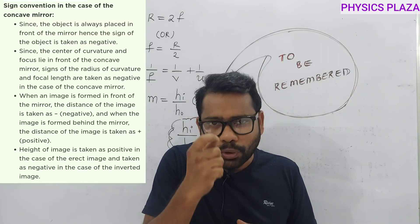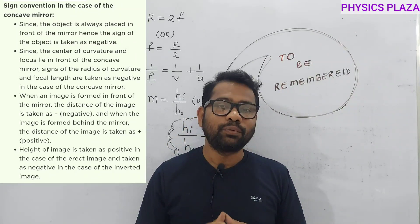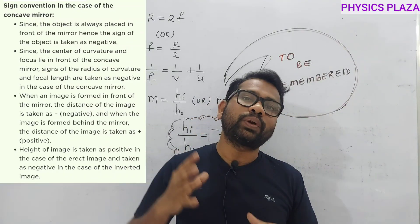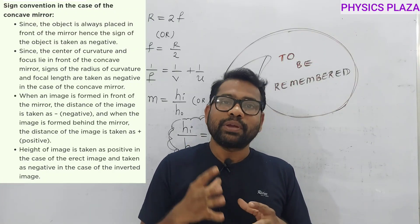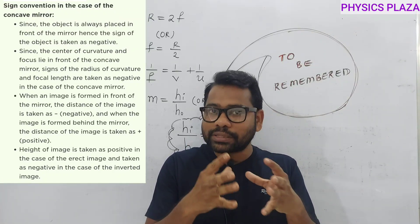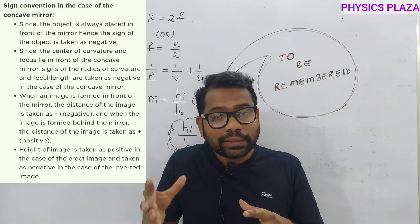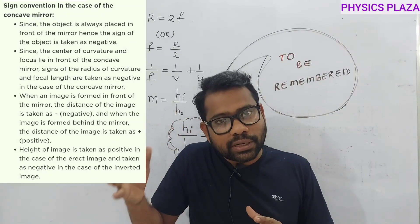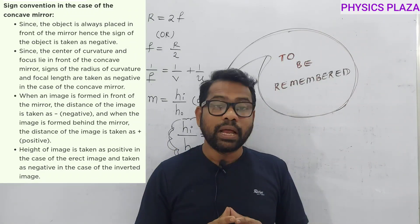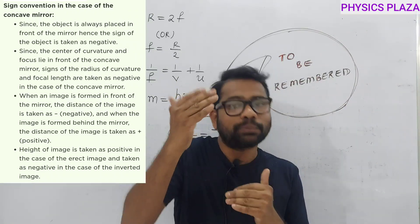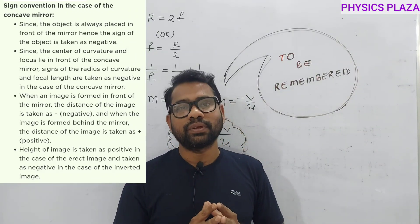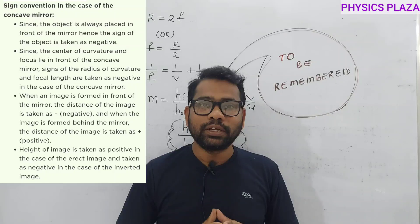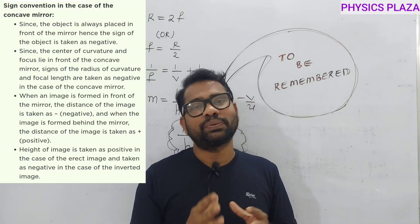Let us recall the sign convention rules once again. The pole of the mirror is taken as the origin, which means all horizontal distances must be measured from the pole only. Distances in the direction of the incident ray are positive, and in the opposite direction are negative. Heights above the principal axis are positive; heights below the principal axis are negative.